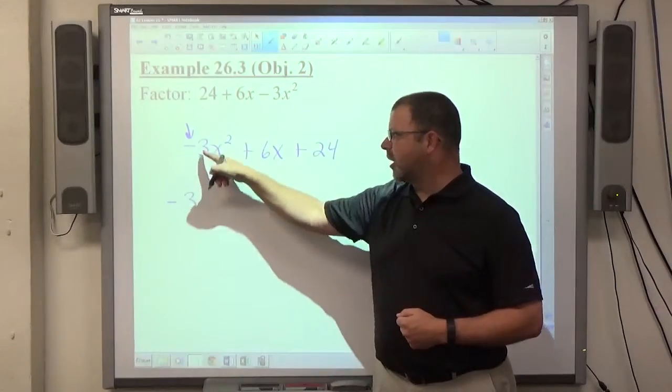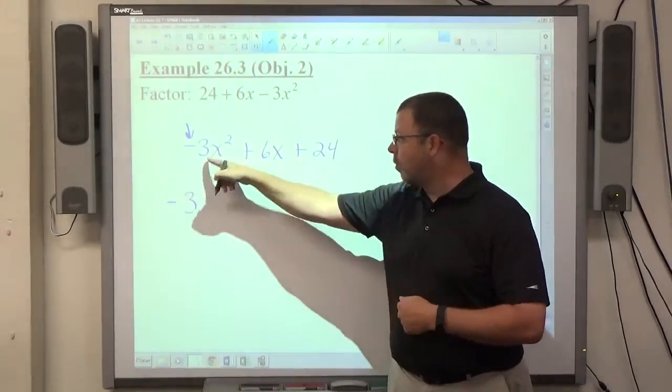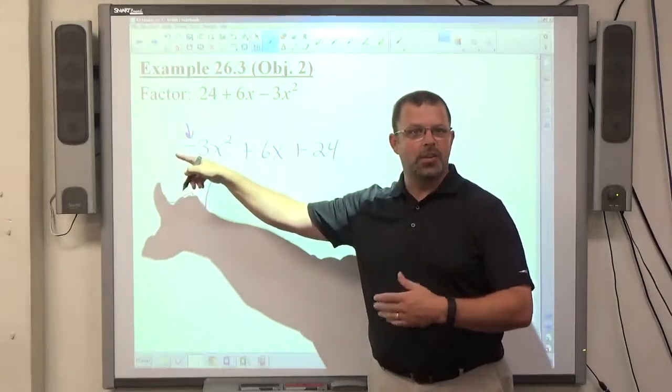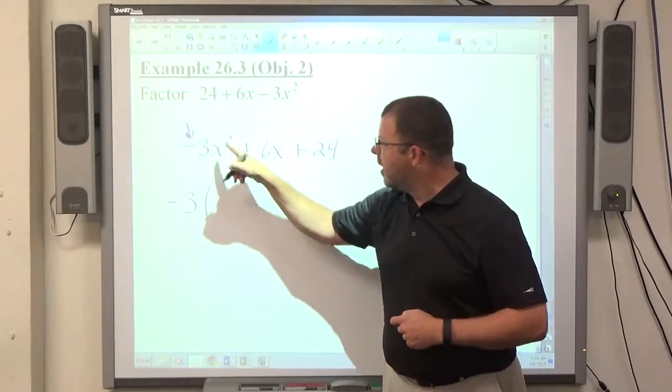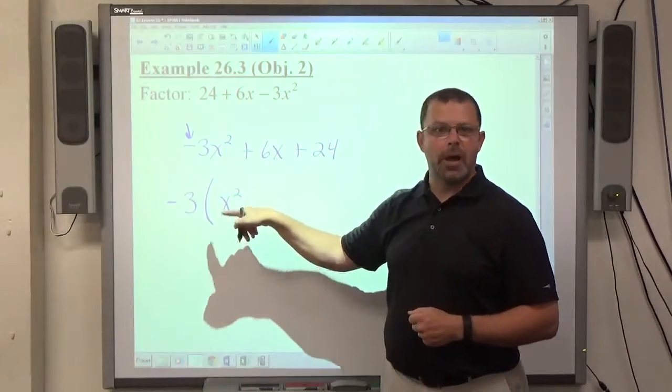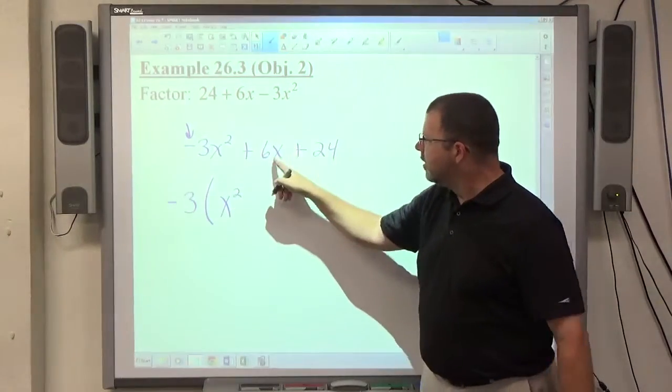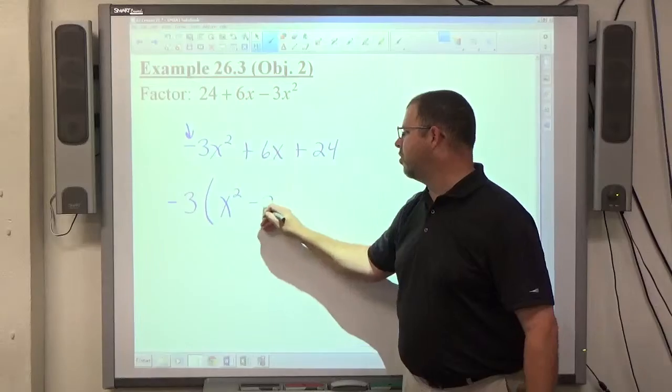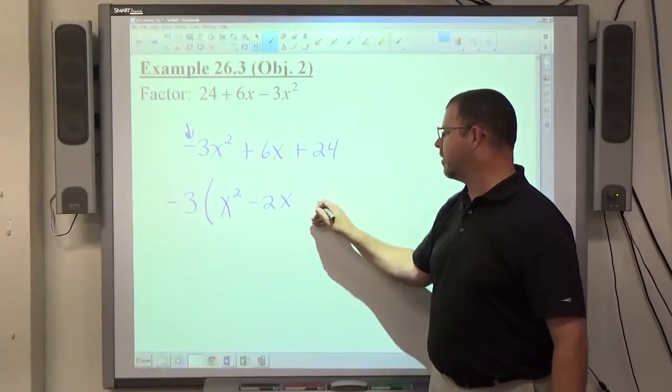So the 3 is going to divide these all by 3, making a 1 and a 2 and an 8. But the consequence is all the signs are going to change. So -3x² divided by -3 makes positive x², which is what we always want, positive 1x². 6x divided by -3 is -2x, and 24 divided by -3 is -8.